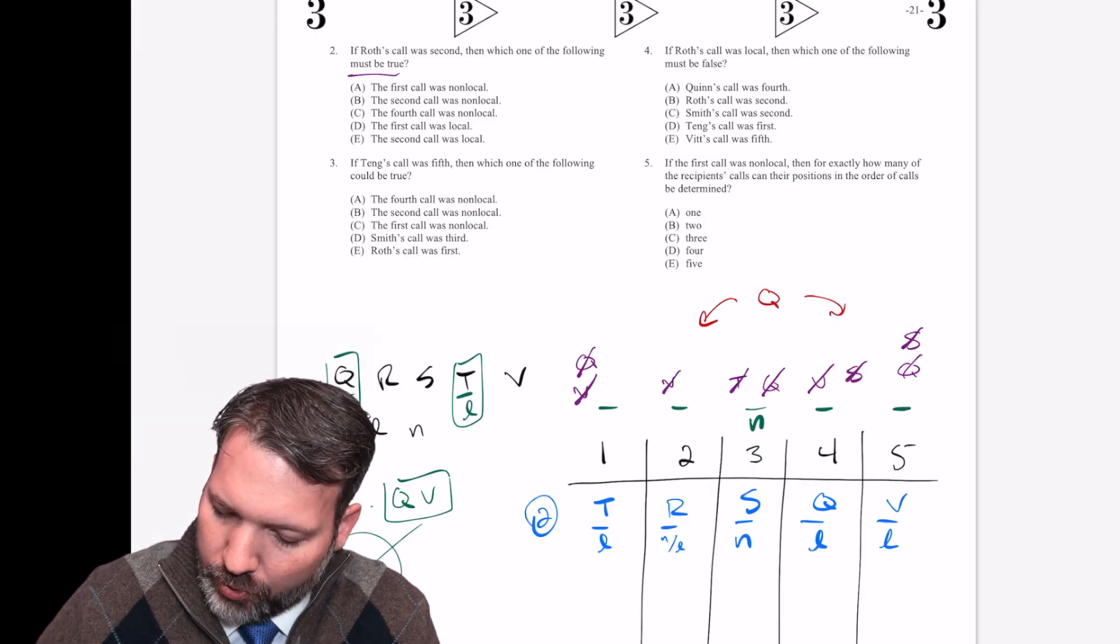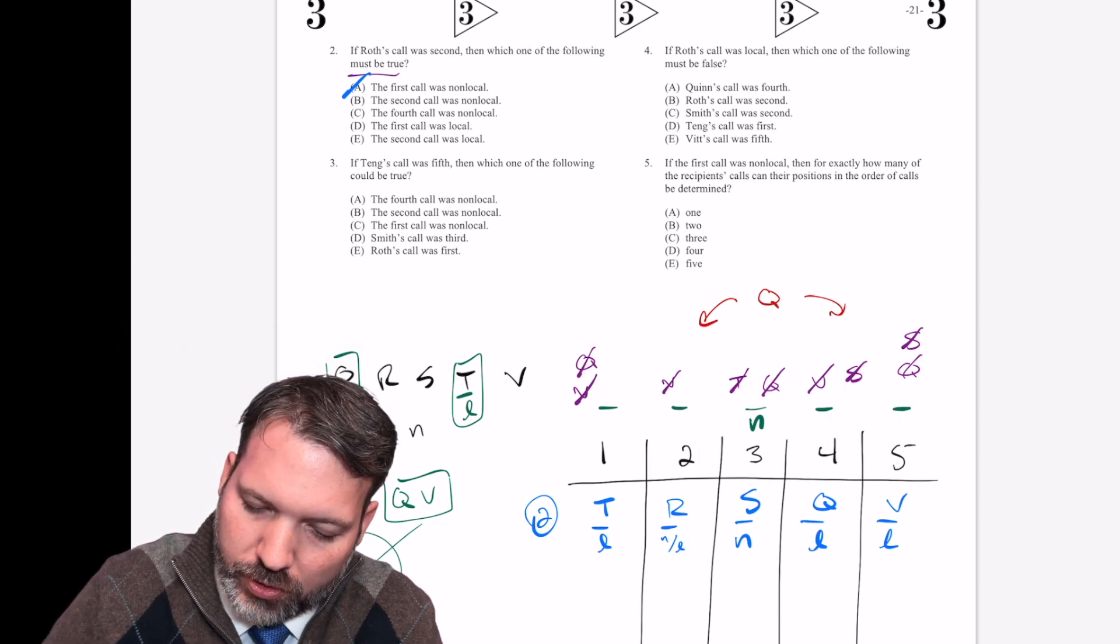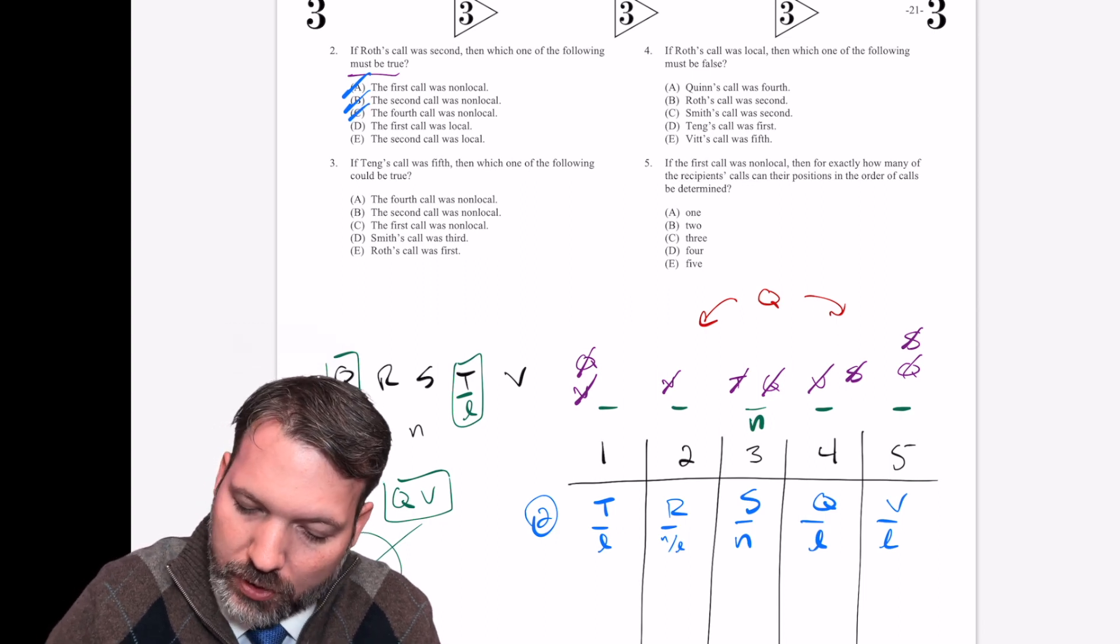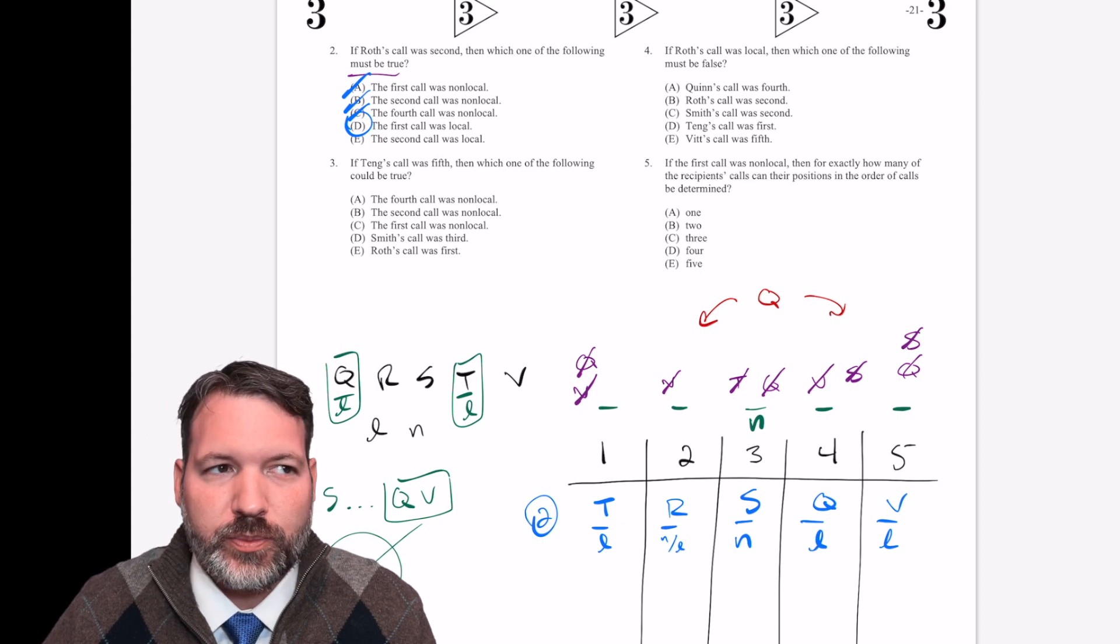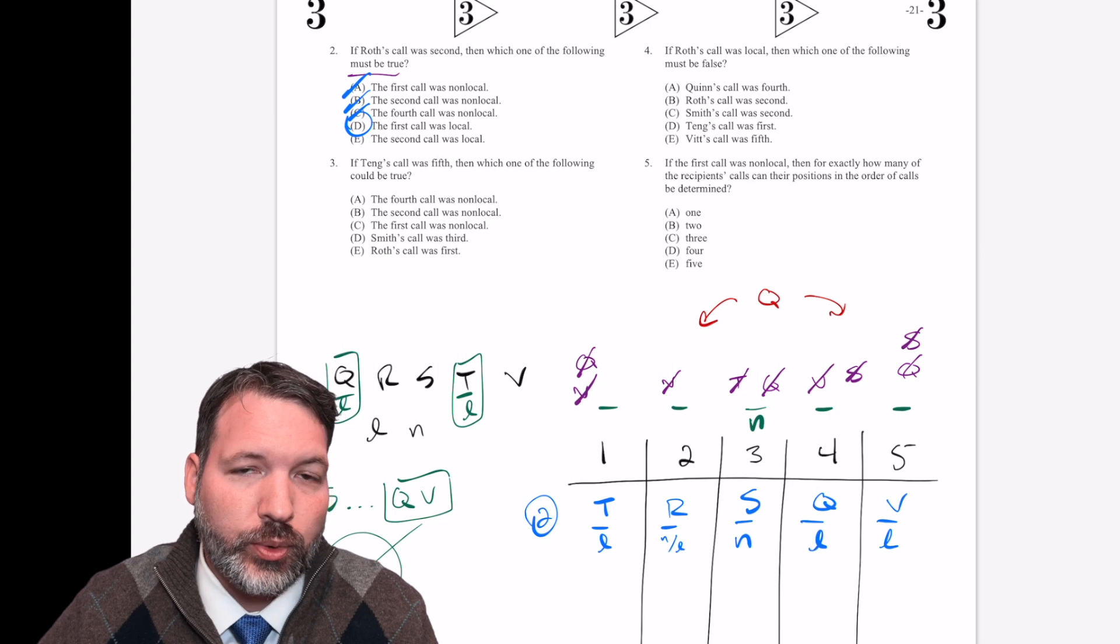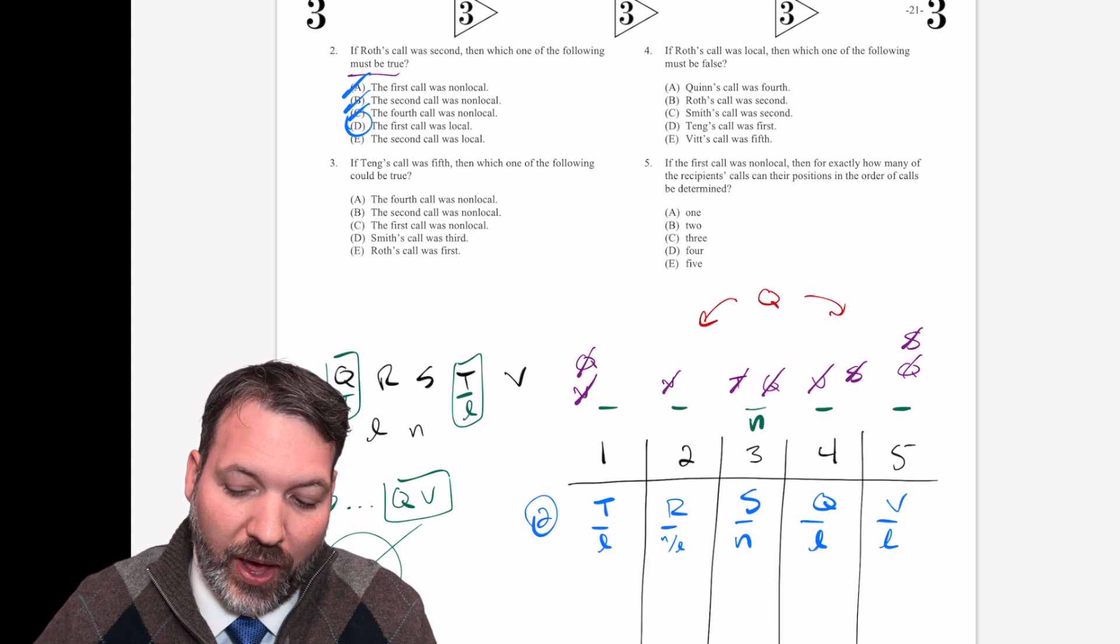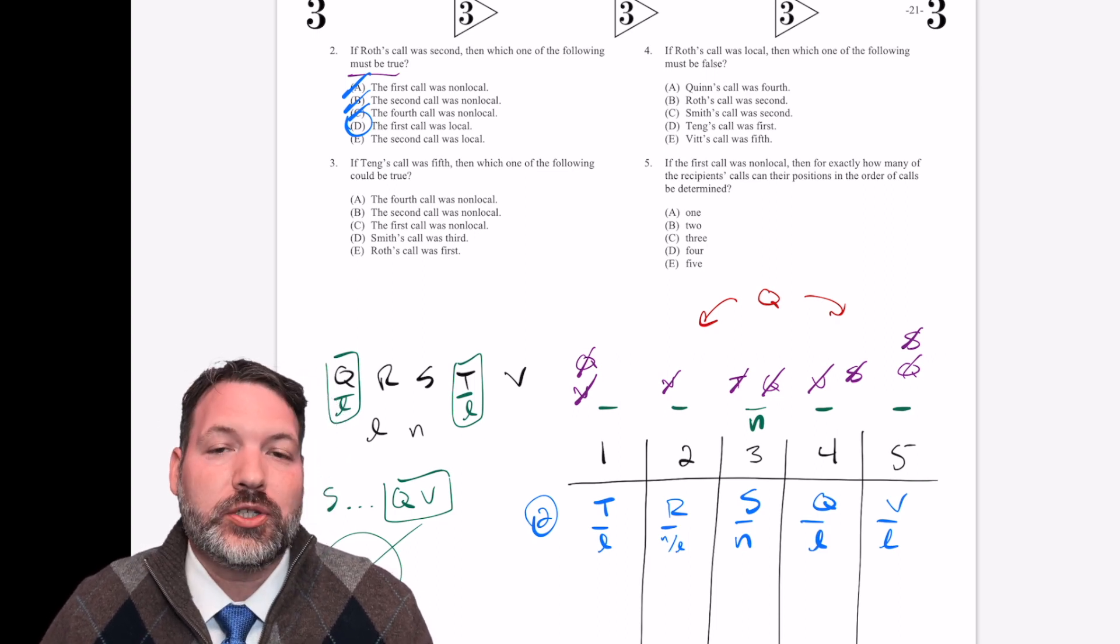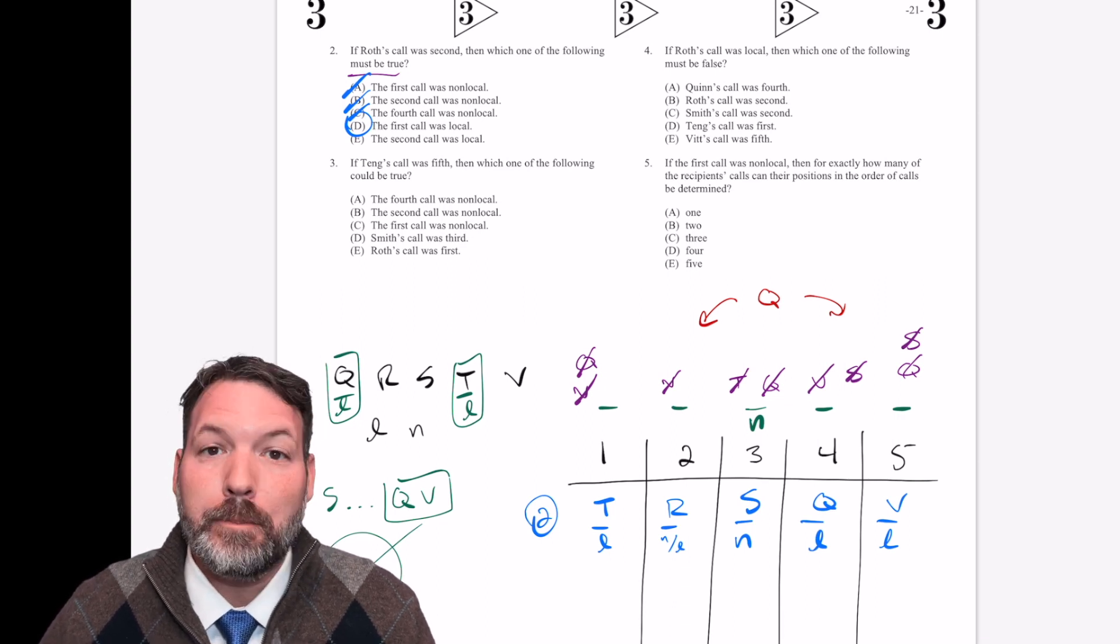Must be true. A, the first call was non-local. That is not true. B, the second call was non-local. Could be true, not a must be true. C, the fourth call was non-local. That is not true. The first call was local. That is it. Two is D. If you've watched my videos, I've talked about this before, but this is something that's come up recently as I advise a few students on the Reddit board. One of the easiest ways to pick up time is to stop checking answer choices when you don't need to. We have found the must be true. There is no reason to read E just to make sure that it's not a must be true. Something will be wrong with E. Trust the process. Trust your work. Move on.